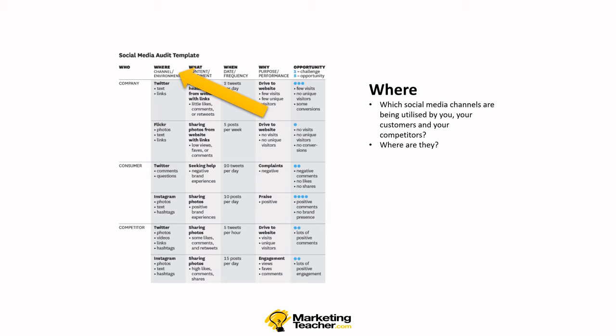Now let's go across the top to Where. Which social media channels are being utilized by you, your customers, and your competitors? Where do they live in social media land? They might live in more than one social media, or some platforms may be preferable while others are also used. This gives us a wider playing field when looking at the sorts of social media we might decide to use.